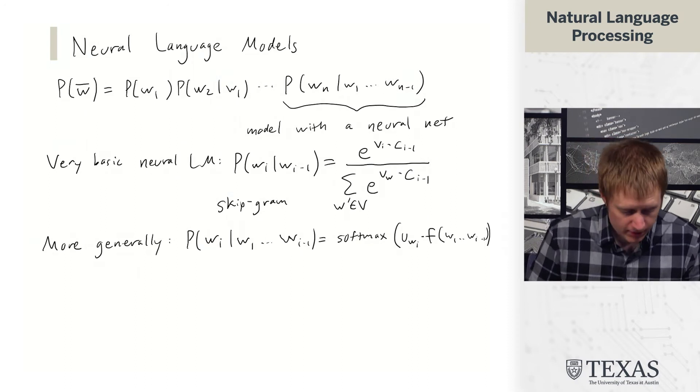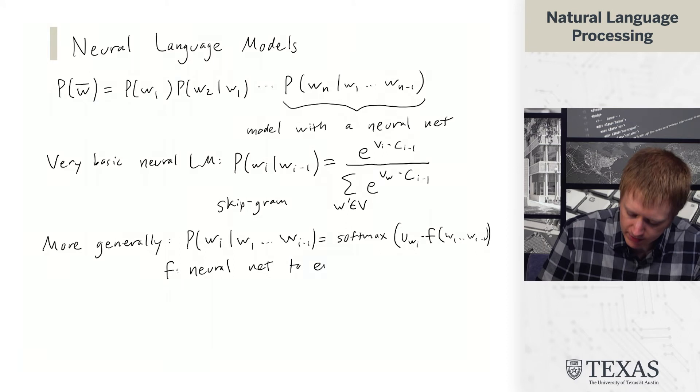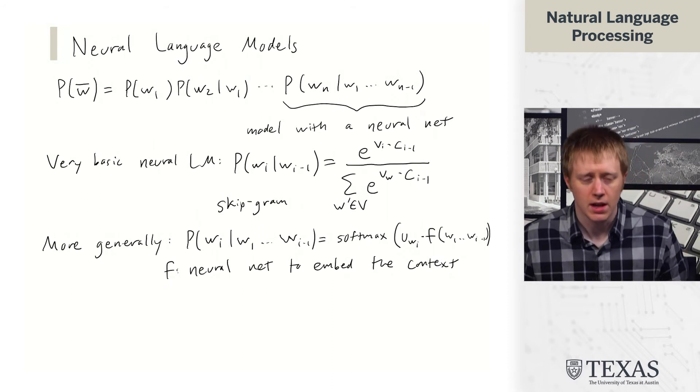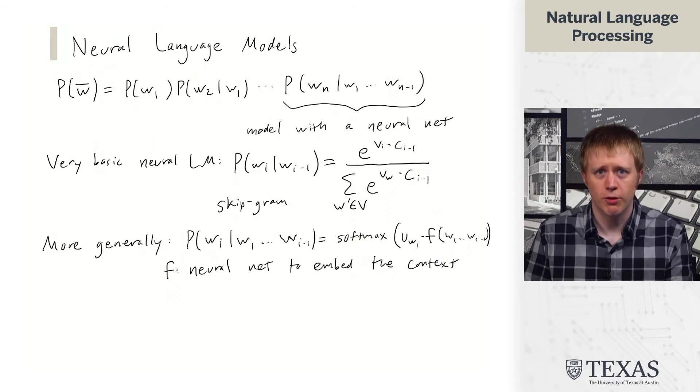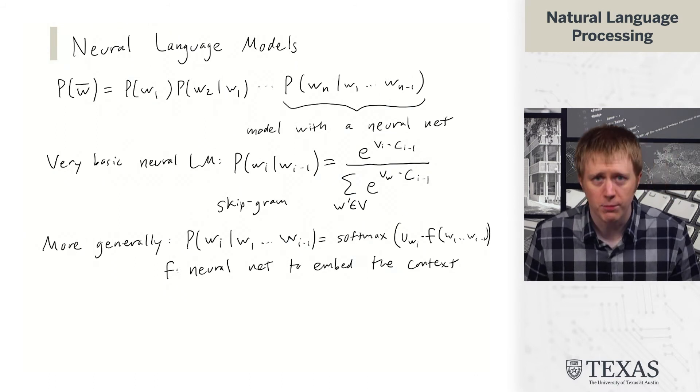So what this function f could be is a neural net to embed the context. So there's a couple of choices for ways that we could do this.